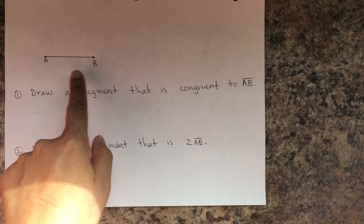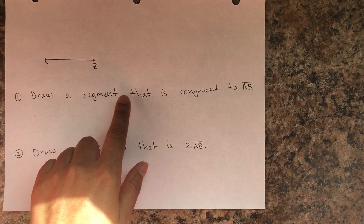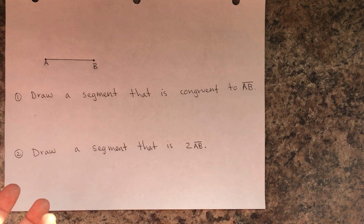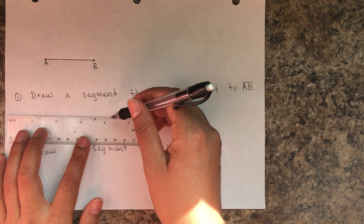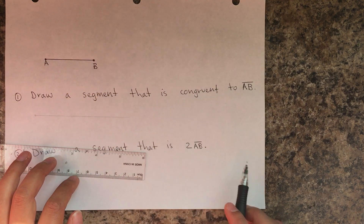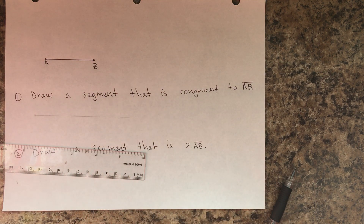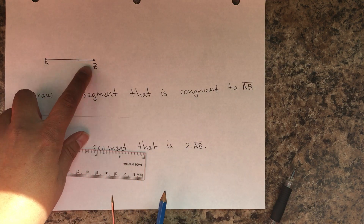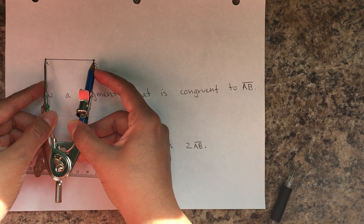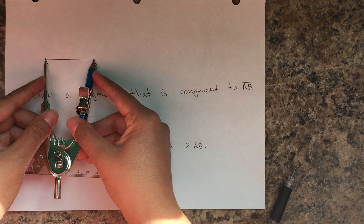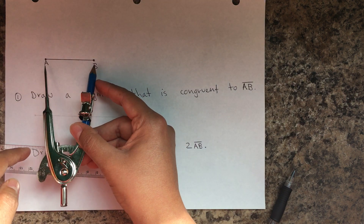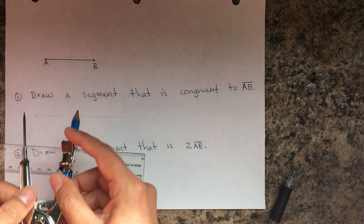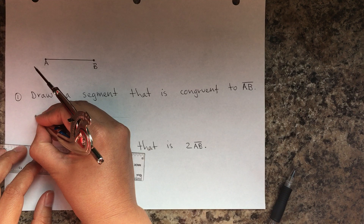We have line segment AB and it says draw a segment that is congruent to AB. Congruent means exactly the same measurement. The first step is to draw a very light line, a little bit longer than AB. Then place one point of the compass on point A and the pencil point on point B — that tells you how long the segment is.